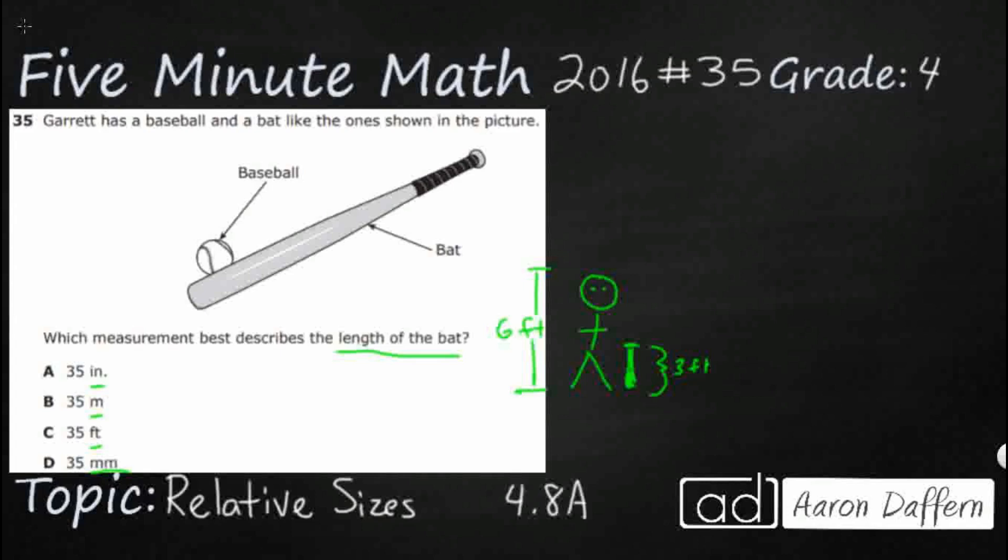Now, what do we know about all of these other measurements? Well, three feet, there are 12 inches in a foot. So 12 inches equals one foot. So if I were to do three feet, well, I would just need to take those 12 inches and multiply them by three and you're going to get 36 inches. So 35 inches is our answer for A. So that is really close. So that's looking like a pretty good option right now.